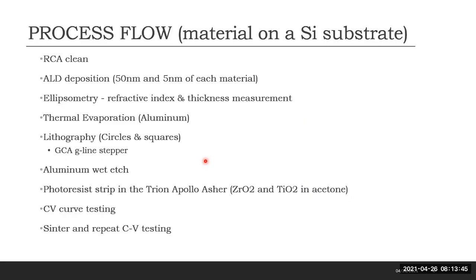The process flow for this experiment started with an RCA clean followed by an ALD deposition of 50 and 5 nanometer of each of the three materials, giving us a total of six wafers. Ellipsometry was used to confirm the thickness deposited. For the 5 nanometer wafers, the ellipsometer required the refractive index found using the corresponding 50 nanometer wafers to be input into the software. Thermally evaporated aluminum was used as the gate electrode. The GCA stepper was used to print the capacitors of varying areas and the aluminum was then wet etched.